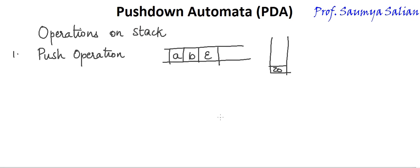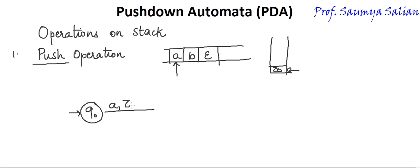Now let's understand what are the different operations on stack. The first operation is push operation. Consider this input tape: initially reading an A and stack top is Z naught. Starting from state Q0, when the read header reads an A and the stack top is Z naught, perform push operation — push A onto the stack, writing A, Z naught. A is pushed on top of Z naught and we read state Q1.